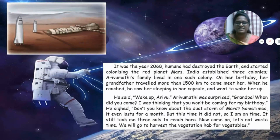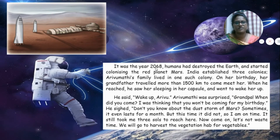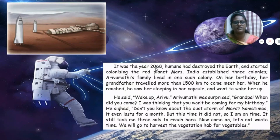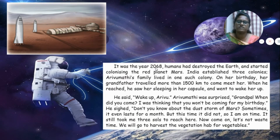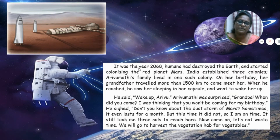In this lesson, the humans are in the future year 2068. The Earth has been fully destroyed by the humans and they have started to colonize in the red planet called Mars. So in the future 2068, the Earth has been fully destroyed and the people have started to live on Mars.